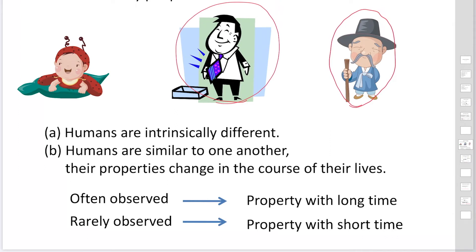And the second interpretation is that humans are similar to one another, but their properties change in the course of their lives. First interpretation: there are three types of human beings. Second interpretation: humans are changing, and we know this second interpretation is correct.